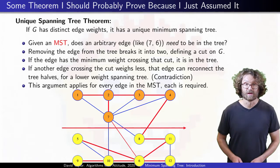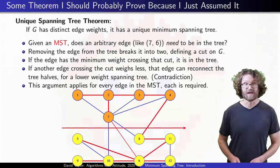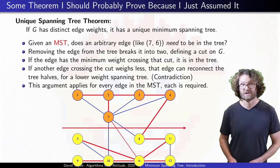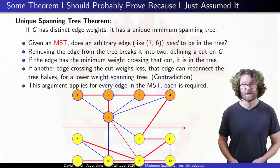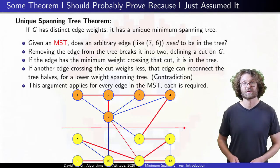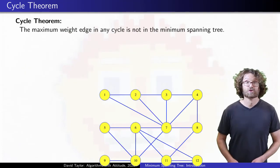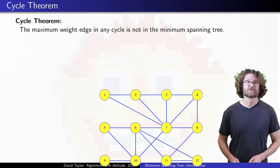With distinct edge weights, the minimum edge crossing any cut is in the minimum spanning tree, and any edge in the minimum spanning tree is the minimum weight edge crossing the cut it defines on the graph with its tree. Just one more theorem, two of the next three videos use it and it's really quick.